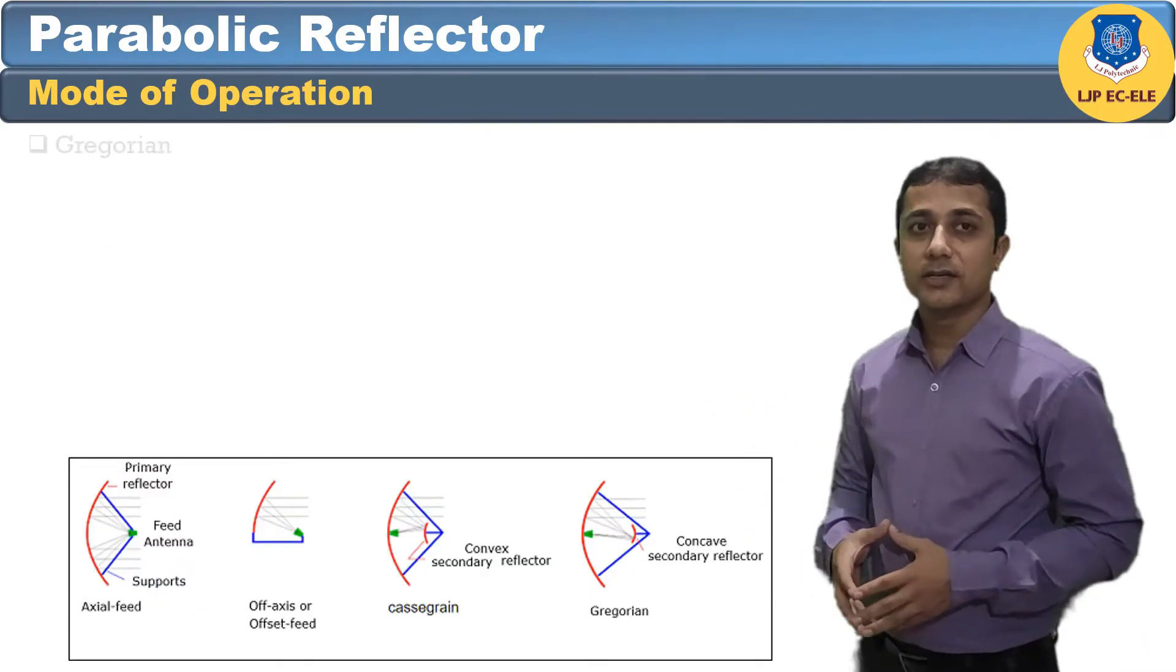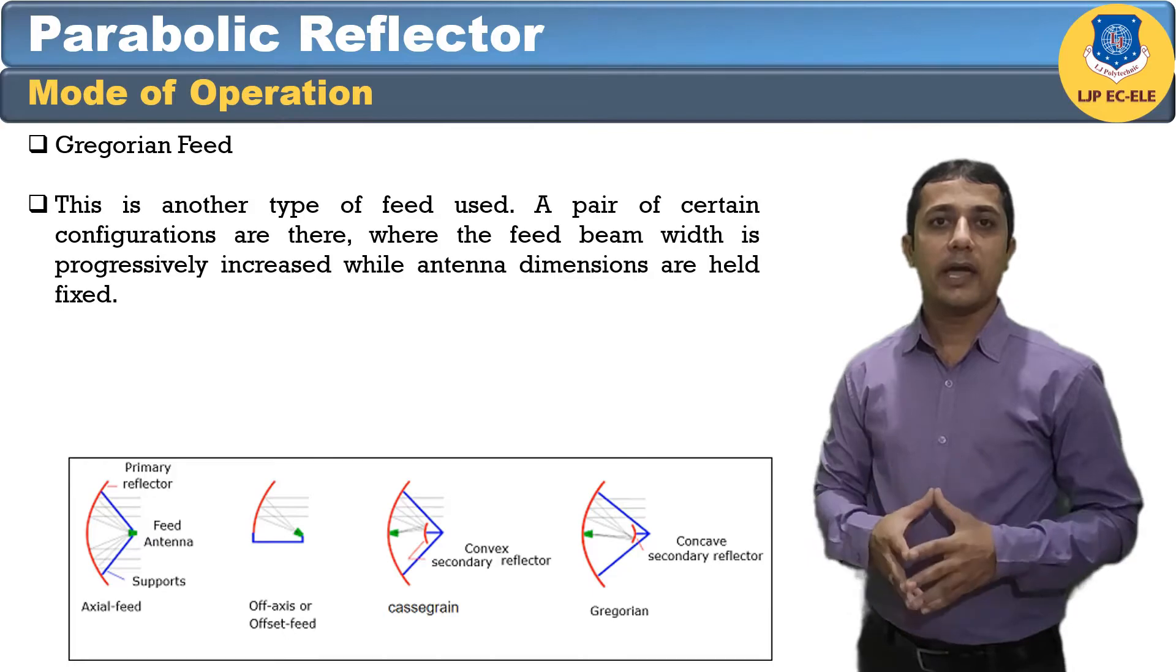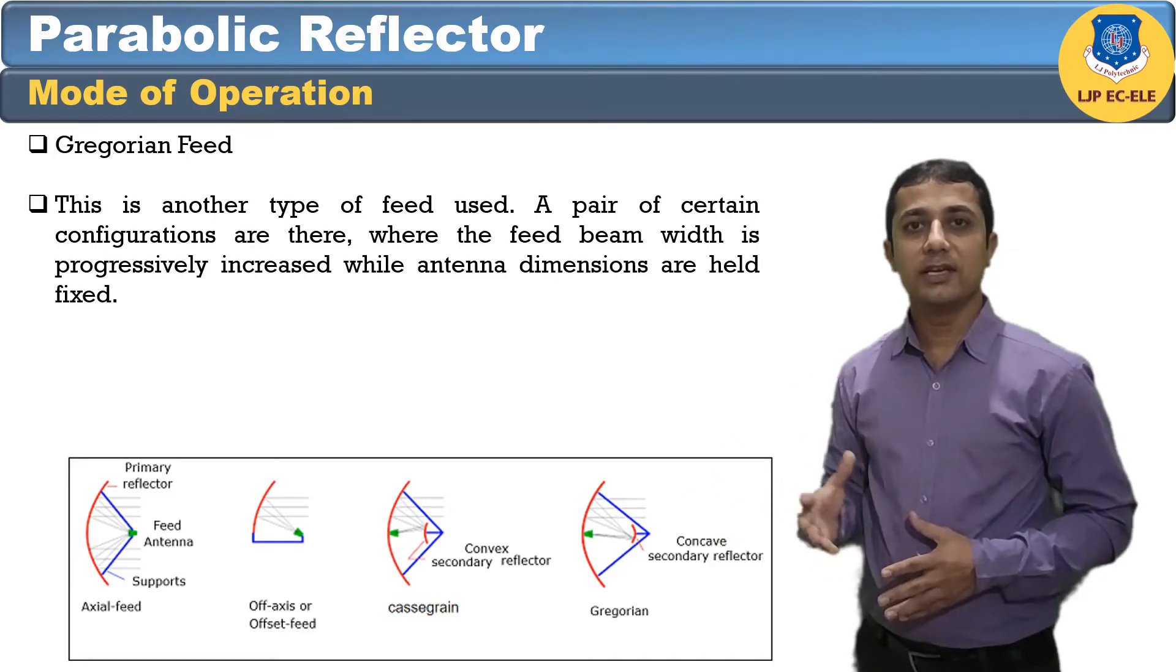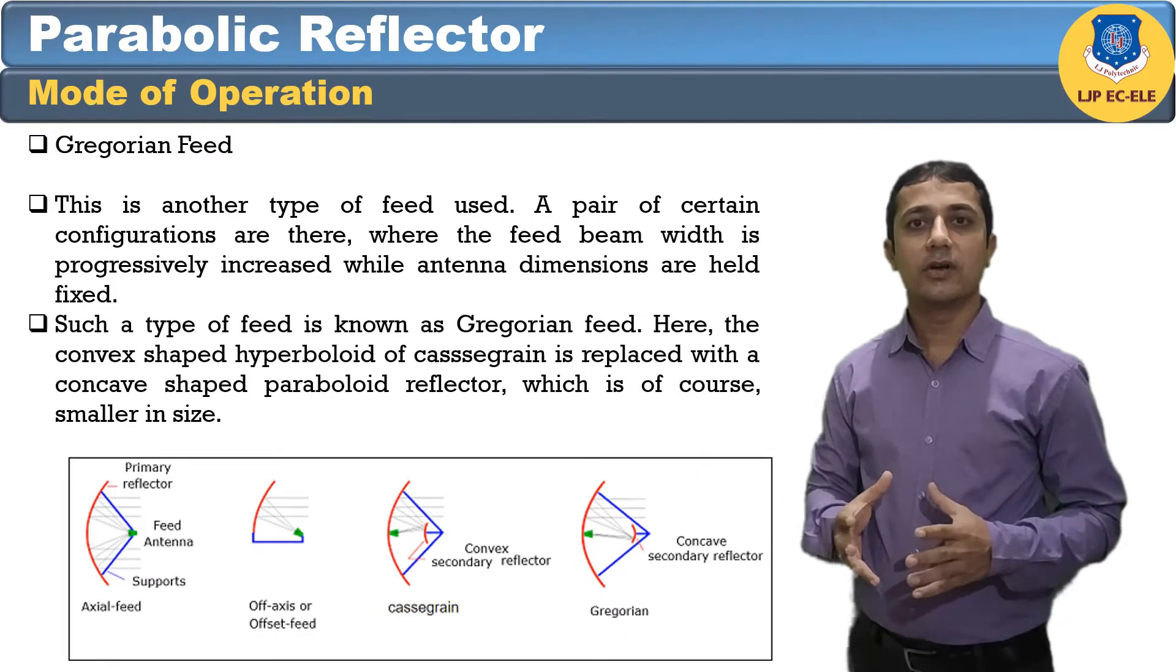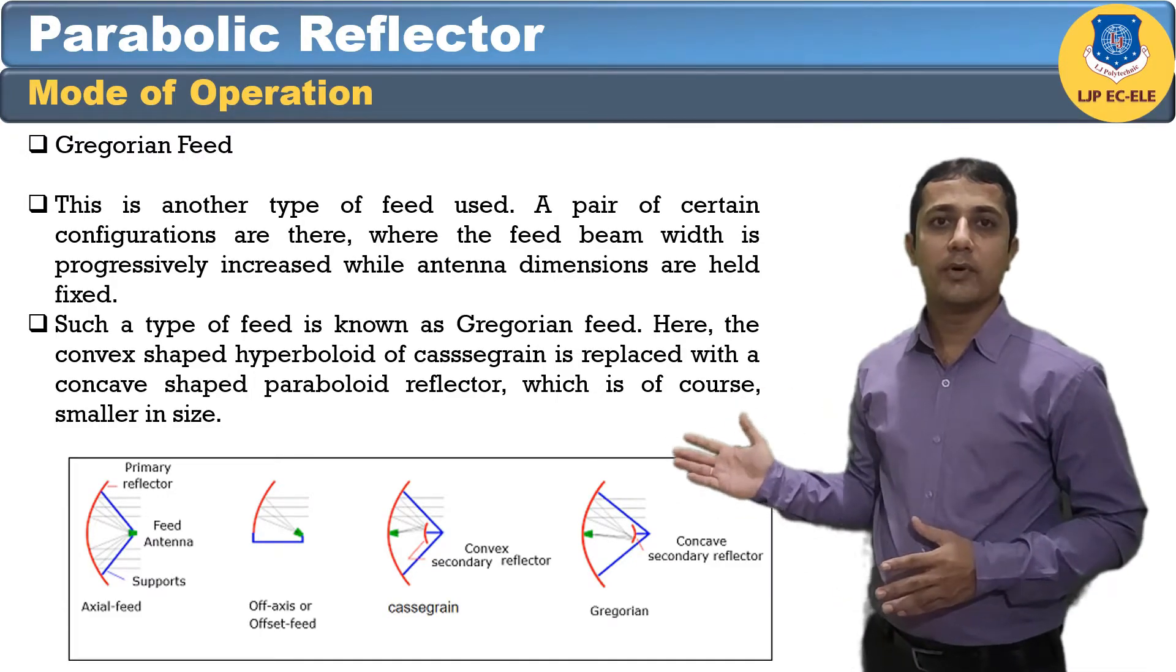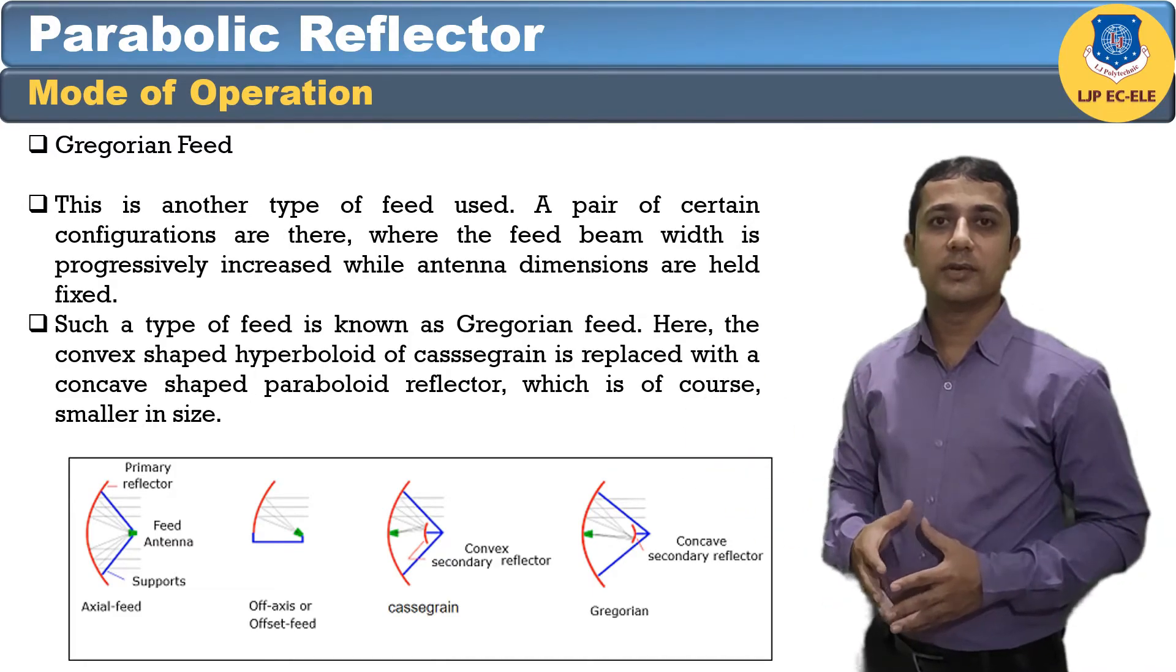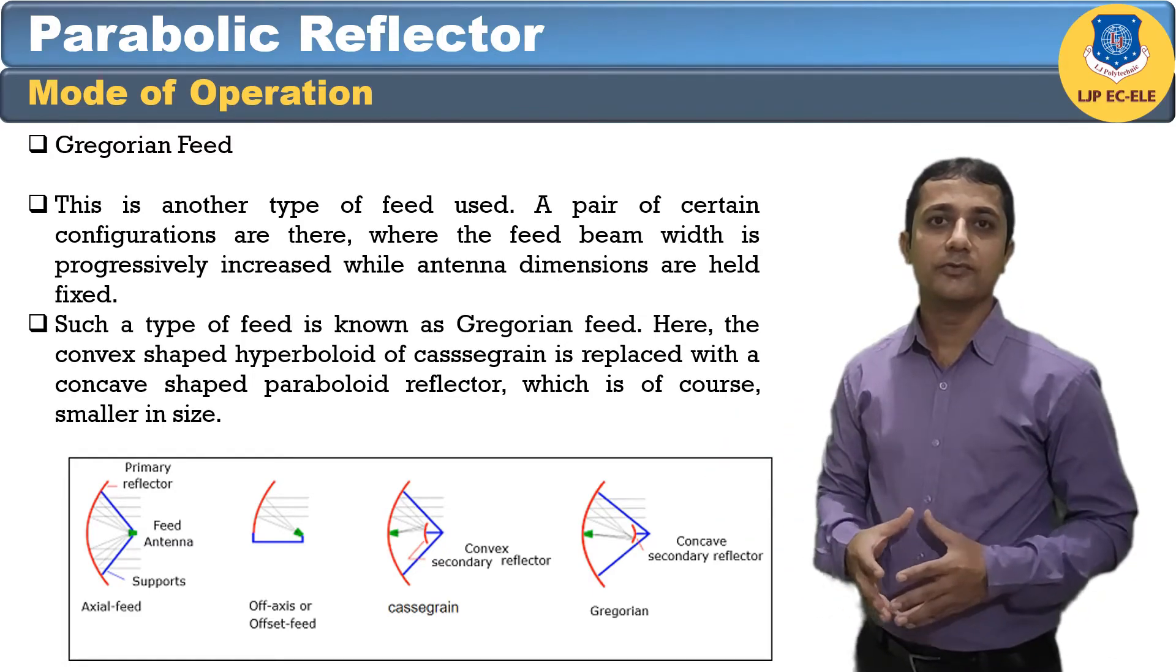The second is the Gregorian feed. This is another type of feed used. A pair of certain configurations are there where the feed beamwidth is progressively increased while antenna dimensions are held fixed. Such type of feed is known as Gregorian feed. Here the concave shape hyperboloid of Cassegrain is replaced with concave shape paraboloidal reflector which is similar in size. These Gregorian feed type reflectors can be used in four ways.